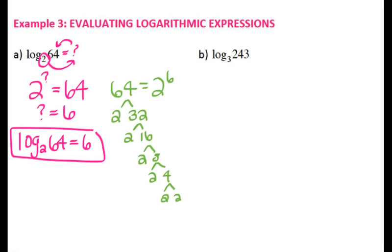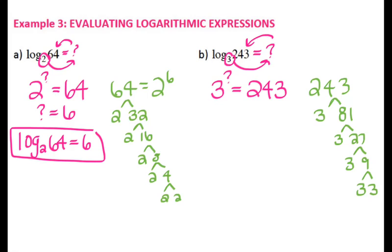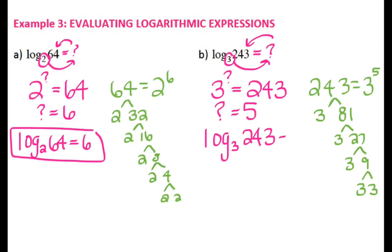We can do the same thing for letter B: we're trying to figure out what log base 3 of 243 equals. Your logarithm always equals an exponent, so 3 to some power equals 243. Breaking 243 apart in terms of 3 — 3 and 81, 3 and 27, 3 and 9, and 3 and 3 — so 243 is 3 to the 5th power. That means log base 3 of 243 equals 5.